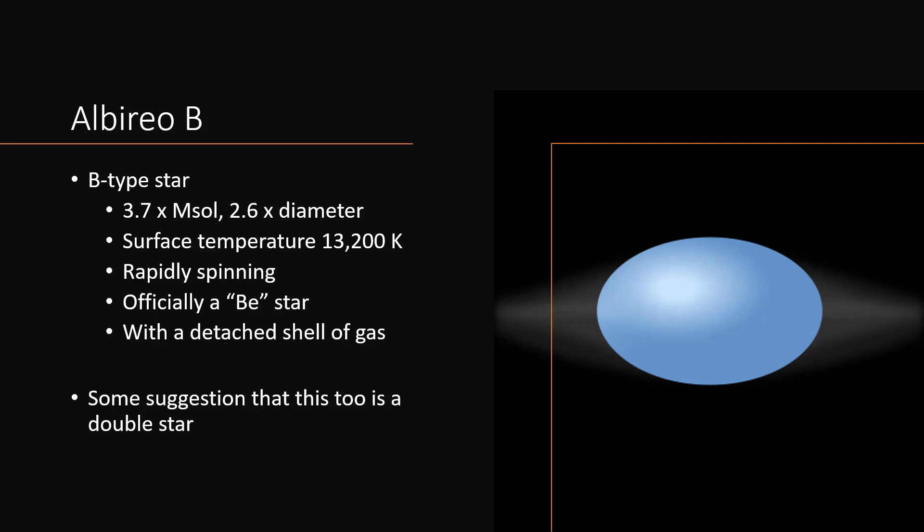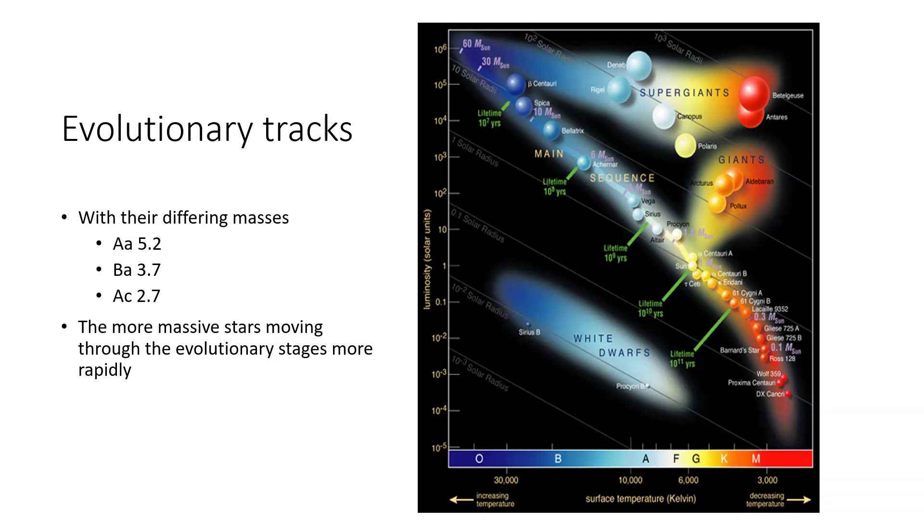Well, trying to know whether or not the distance of Albireo B is the same as Albireo A hasn't really worked for us in terms of proving if the two are actually in orbit. So what other clues might we look at? Well, if we look at the evolutionary track on the Hertzsprung-Russell diagram, which would show where stars would be on the main sequence on that diagonal line down the middle.